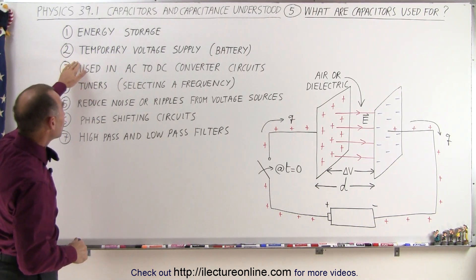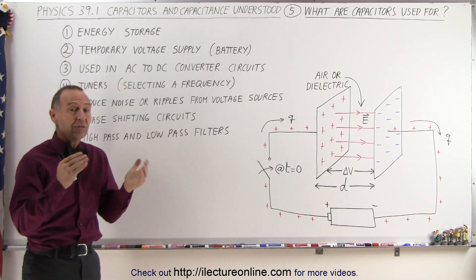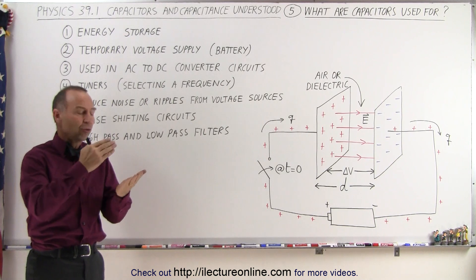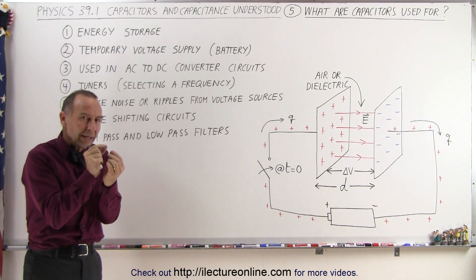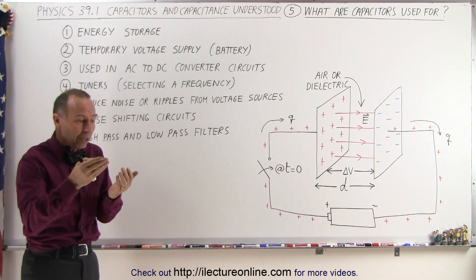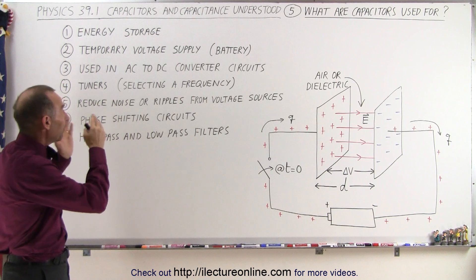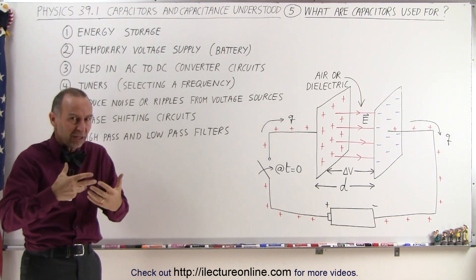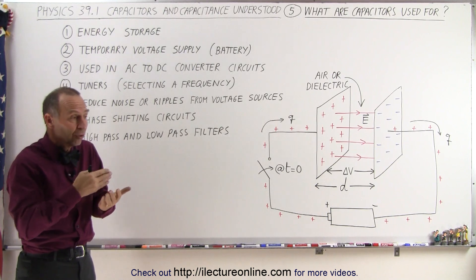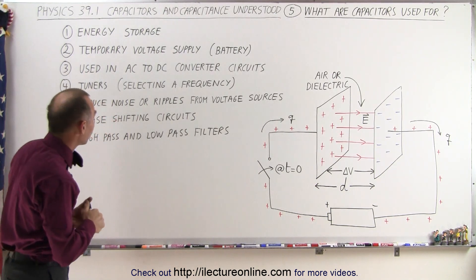They can also be used as temporary voltage supplies or temporary batteries. Capacitors are used in case we have to switch from one voltage source to another, and during that short amount of time when we switch from one source to another, we may be without any power for a short amount of time. A capacitor could bridge that gap for a very short period of time, a few milliseconds, maybe even a few seconds, so that there's no interruption of voltage or power.